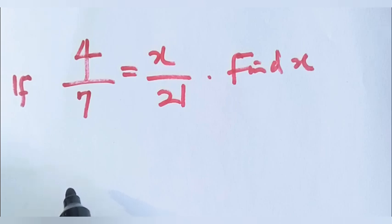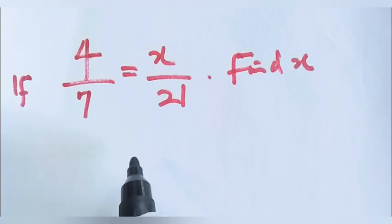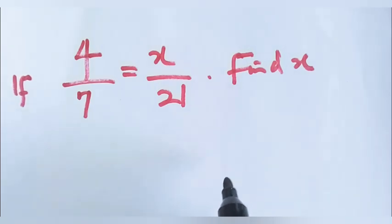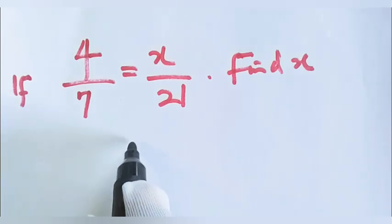If 4 over 7 is equal to x over 21, find x. Let's do it.